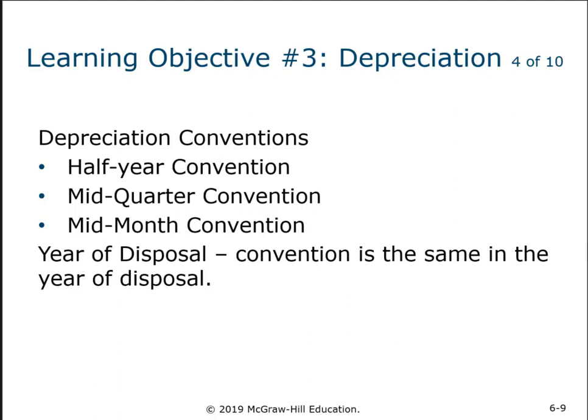Mid-month convention applies to all real estate — both residential and non-residential — no matter how many other assets you bought. Half-year and mid-quarter do not apply to real estate. Mid-month convention means any asset bought during the month is treated as if bought halfway through that month. So real estate purchased in March is depreciated starting on March 15th, regardless of whether you bought it on the 2nd or the 30th. You calculate monthly depreciation, apply half a month in the month of purchase, and then the rest of the year.